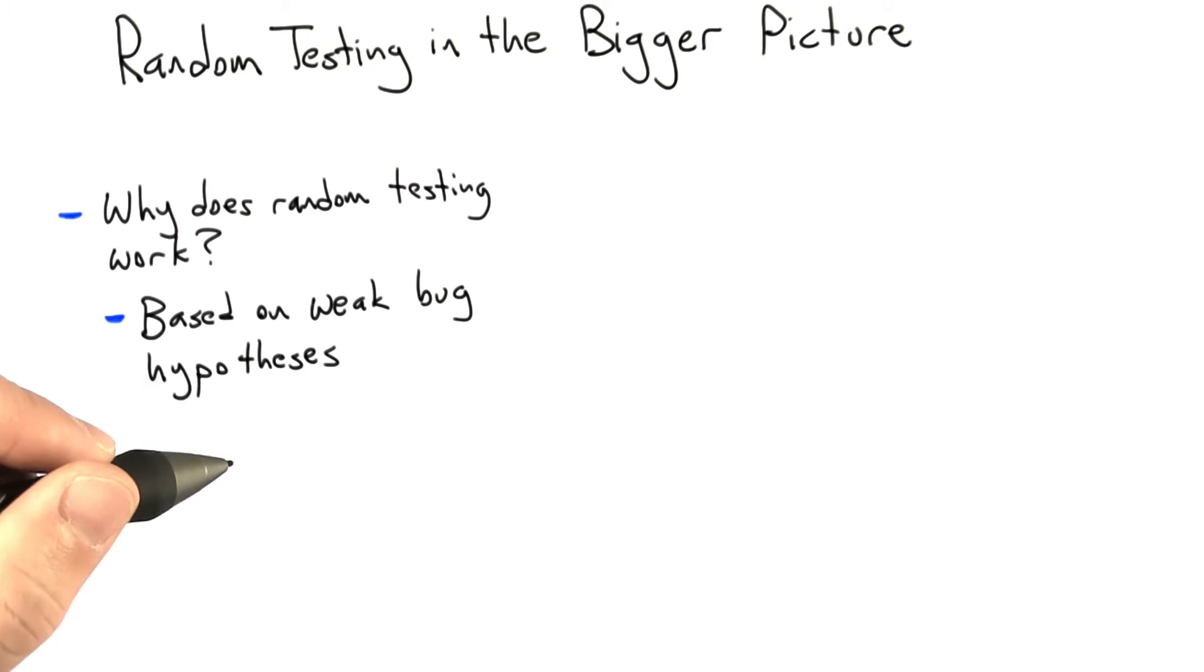This turns out to be powerful because given the very complex behavior of modern software, people don't seem to be very good about forming good hypotheses about where bugs lie.